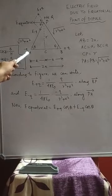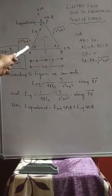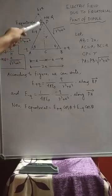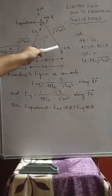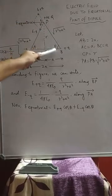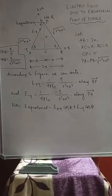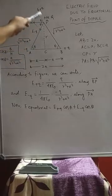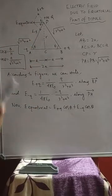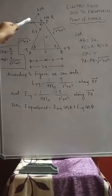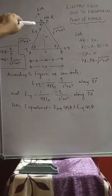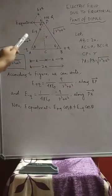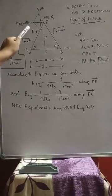At point A we have a negative charge, so the positive charge at P will be attracted by this negative charge — that is why E-q is directed toward A. According to alternate angles with parallel lines, this angle is theta and that angle is theta. So using the resolution of vectors, E-q has component E-q·cosθ in one direction and E+q has component E+q·cosθ in the other. E_equatorial is the resultant of E+q and E-q using the parallelogram law.